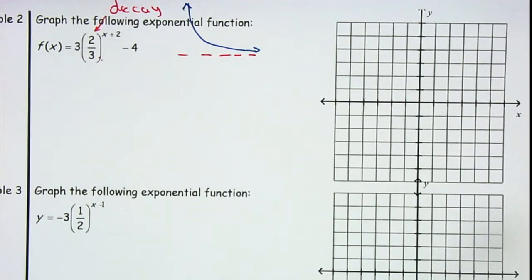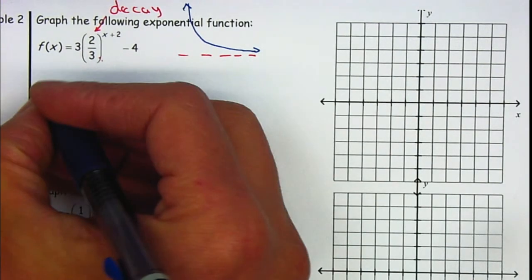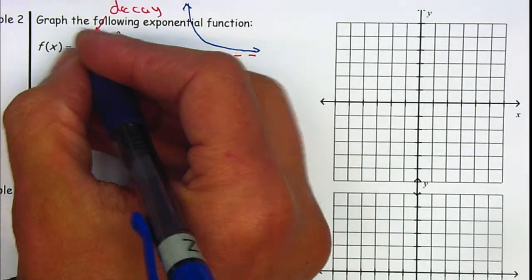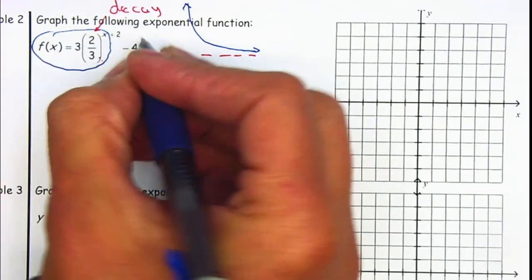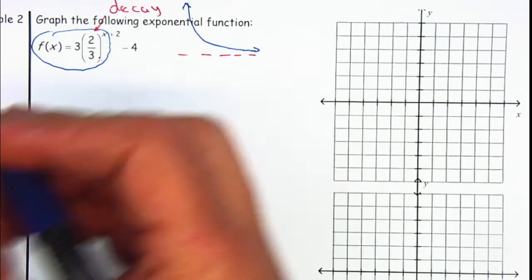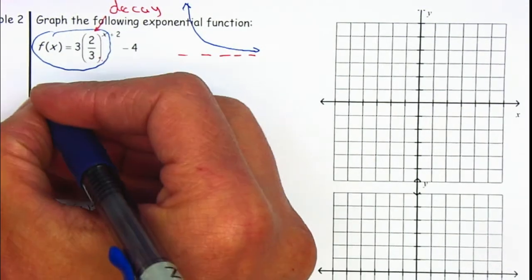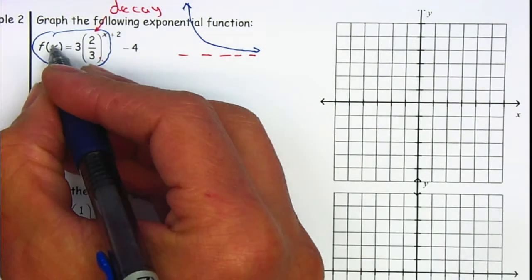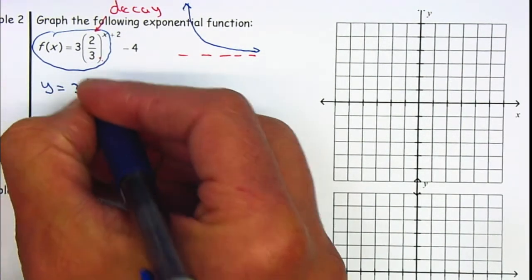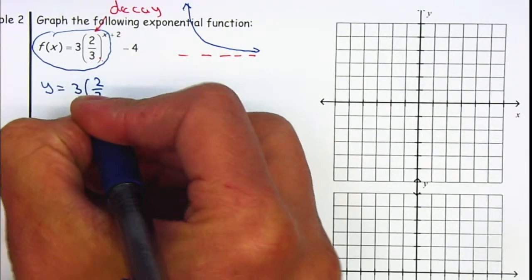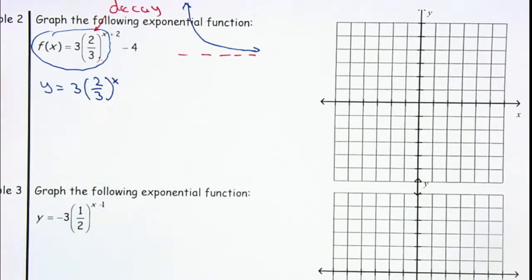Now let's go and start graphing. First I'm going to take part of it — I'm going to leave the h and the k behind. I'm going to take the basic power of the graph. So y is equal to — notice that f of x is the same thing as y — three times two-thirds to the x power. And you want to be able to apply different points.